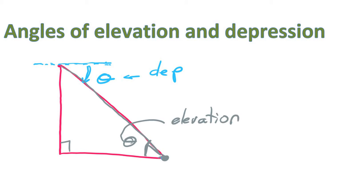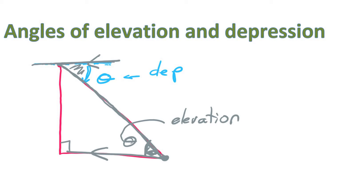So that is the angle of elevation. If you think about it, you've got a letter Z here — you can see this line is parallel to the other line, so we call these alternate angles. Therefore the angle of elevation is the same as the angle of depression. Alternate angles in parallel lines are equal. We're going to do a few examples so you can see how I draw the diagram.